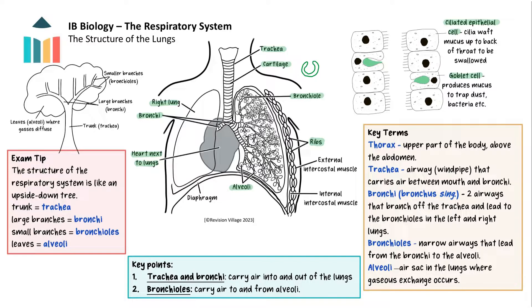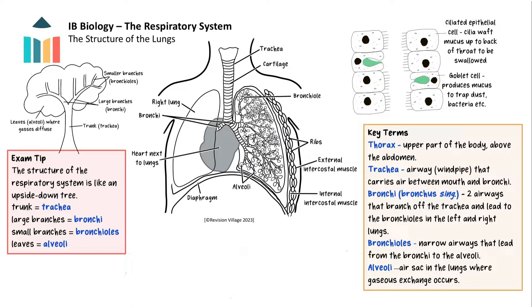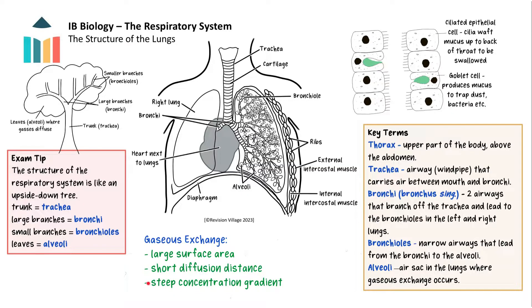The whole structure is like an upside-down tree, with the trachea like the trunk, the bronchi like the main branches, the bronchioles as the smaller branches, and the alveoli as the leaves. The lungs are designed specifically for gaseous exchange, and efficient diffusion relies on a large surface area, a short diffusion distance, and a steep concentration gradient.